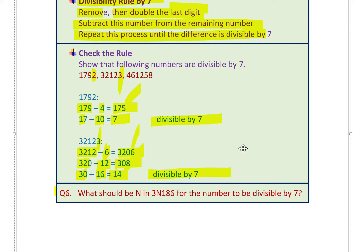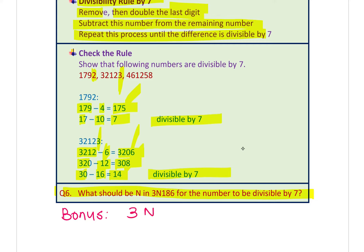Question 6 (bonus question): What should N be in 3N186 for the number to be divisible by 7? Follow the method explained and figure out the answer.